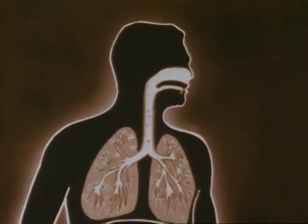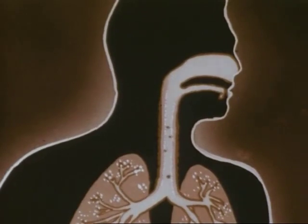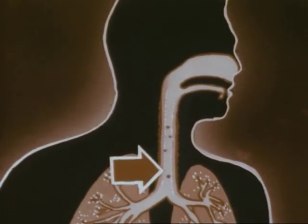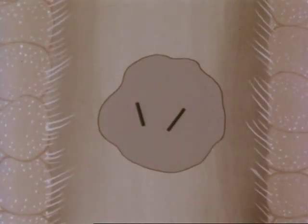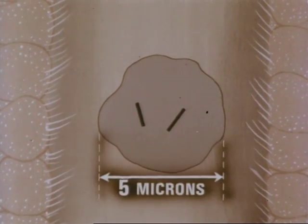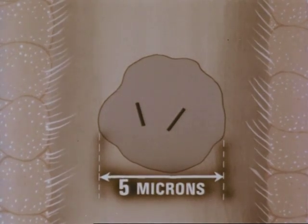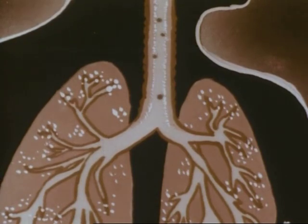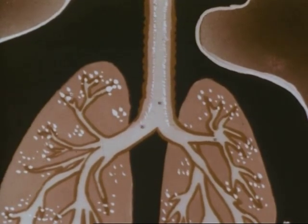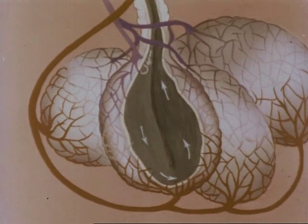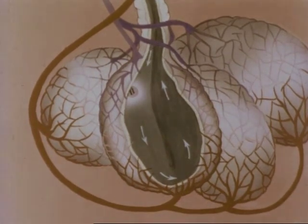Usually the particle must reach the alveoli to take effect. To do so, it must pass all the natural traps in the respiratory tract. The size required to accomplish this feat is estimated to be no more than five microns in diameter. Droplet nuclei range from one to five microns in diameter. Using the vehicle of droplet nuclei, virulent tubercle bacilli reach the alveoli, where they are implanted on susceptible tissue and later initiate infection.